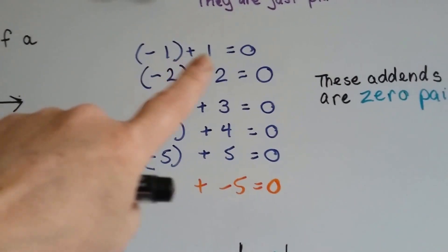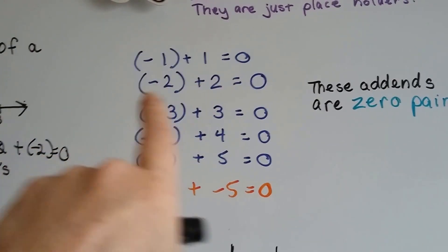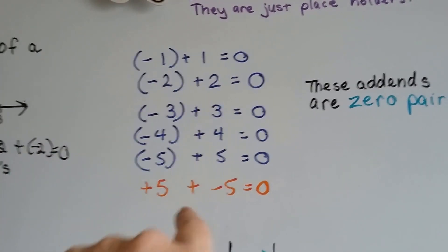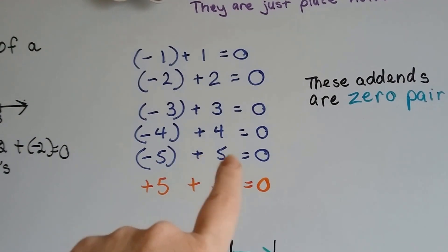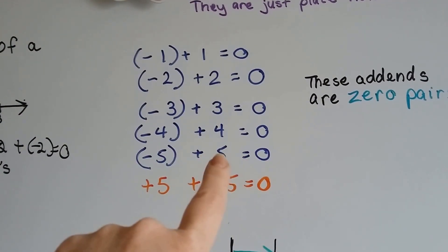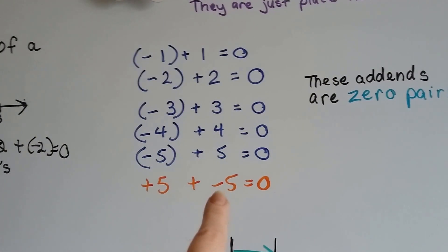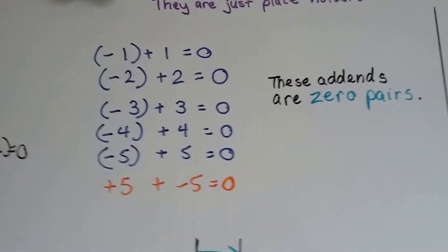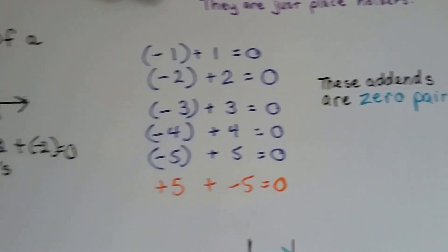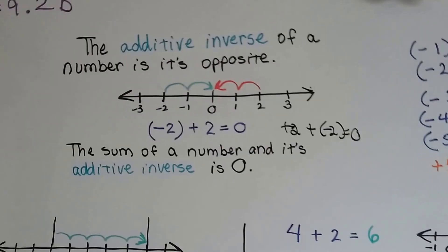If we have a negative 1 and we add 1, it gets us to zero — it's like they cancel each other out. Negative 5 plus 5 gets us back to zero. If we have a positive 5 and we add a negative 5, that's going to get us back to zero. Those are zero pairs — they're additive inverses.